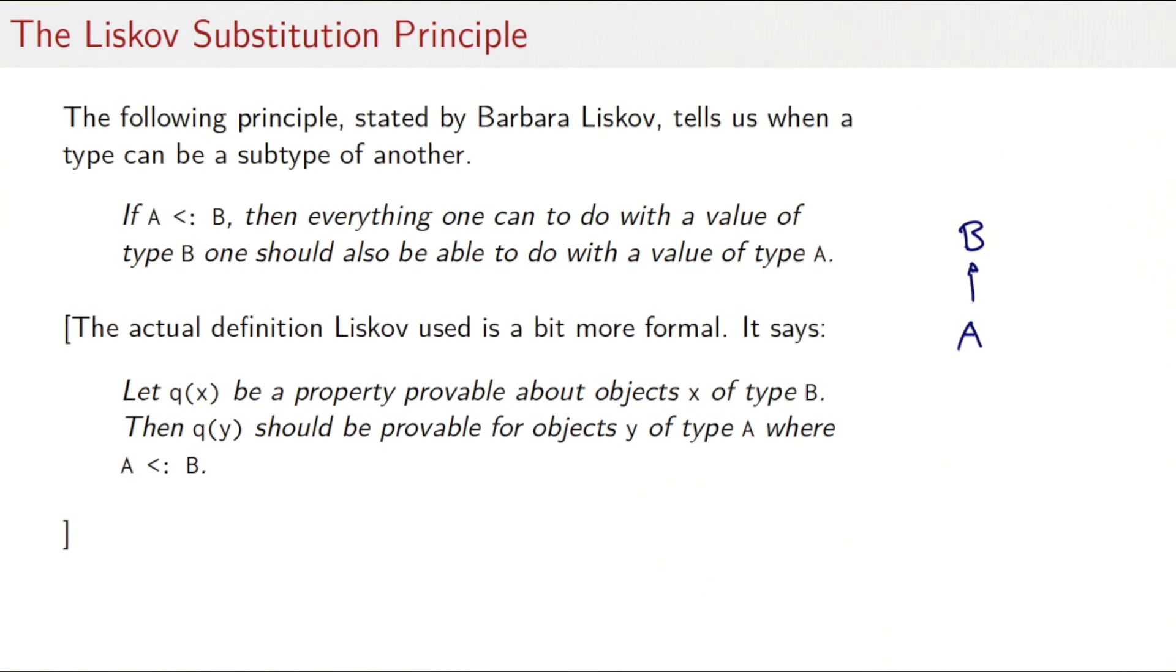The actual definition Liskov used is actually a bit more formal. The definition says: let Q be a property that's provable about object X of type B. Then Q of Y should also be provable for objects Y of type A, where A is less than B. So the original formulation coached it in terms of what you can prove about objects, not what operations you can perform.